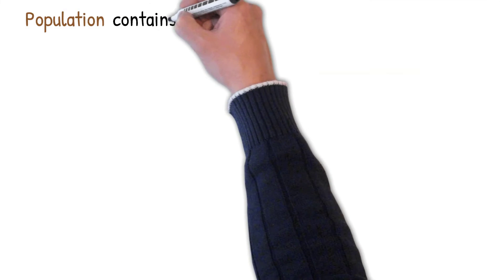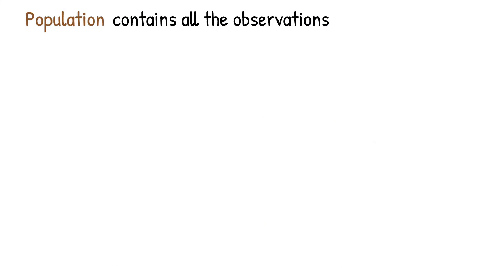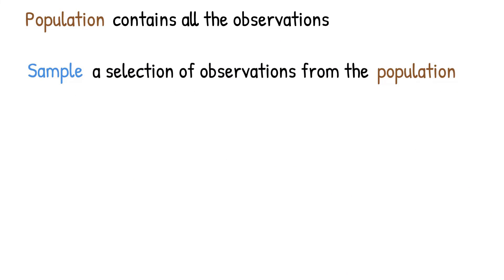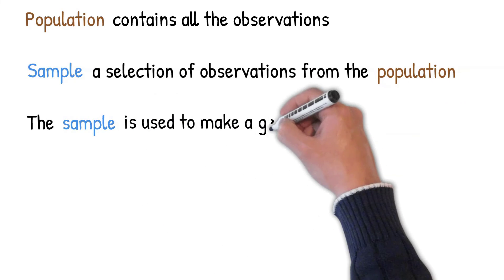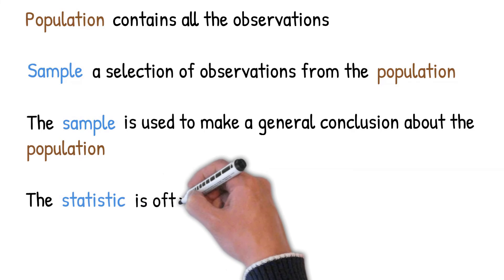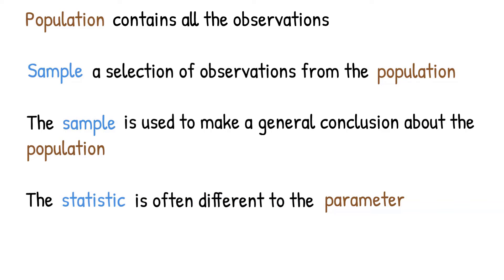So now you understand the difference between a sample and a population. The population contains all the observations, whereas the sample contains just a selection of observations from the population. The sample is used to make general conclusions about the population. The statistic measured in a sample is often different to the parameter in the population. And this is due to multiple factors to include sampling error and selection bias.